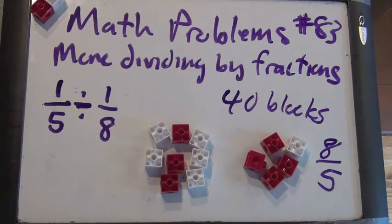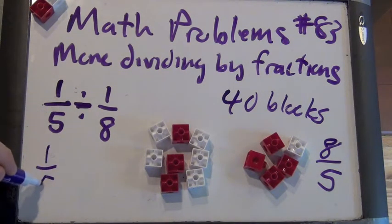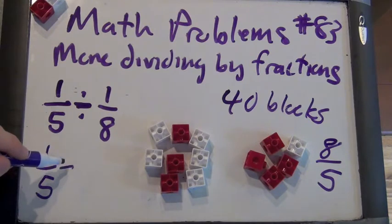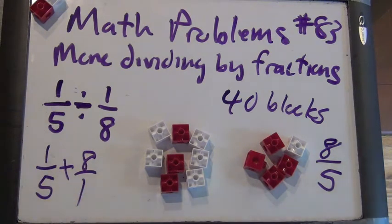Now we can check it using the reciprocal. What does this say? This is the same as our definition of division. 1 fifth over 8 over 1. Times 8 over 1. Which is 8 over 5. Hey! How about that? Now, one last one.